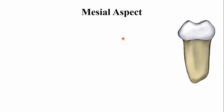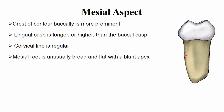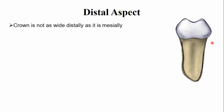From the mesial aspect, the crest of contour on the buccal side is very prominent, near the cervical third region — similar to the mandibular deciduous first molar. The mesio-lingual cusp is long and higher compared to the mesio-buccal cusp. The cervical line is irregular and nearly straight. The mesial root is quite broad bucco-lingually, flat, and terminates in a blunt apex. The bucco-lingual width of the crown is less on the distal side compared to the mesial side.